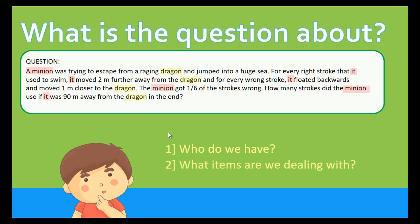Next, we need to look at what items we are dealing with. In this question, the minion is actually trying to escape from the dragon by swimming. The item that we are facing here — in the first sentence we have the sea, but the sea is not very important. The second item would be the strokes. What exactly is a stroke? Strokes are your hand movements when you swim. Here we have 2 types of strokes: the right one and the wrong one.